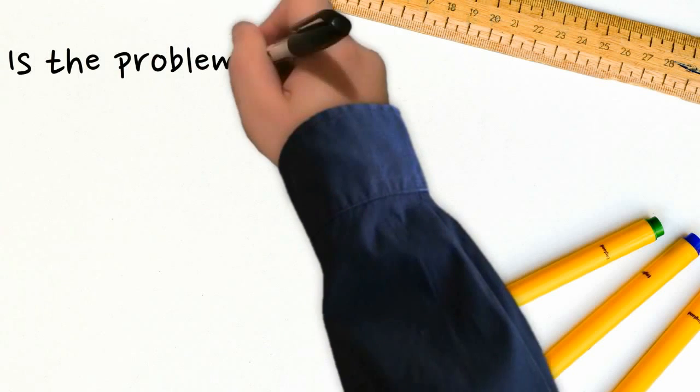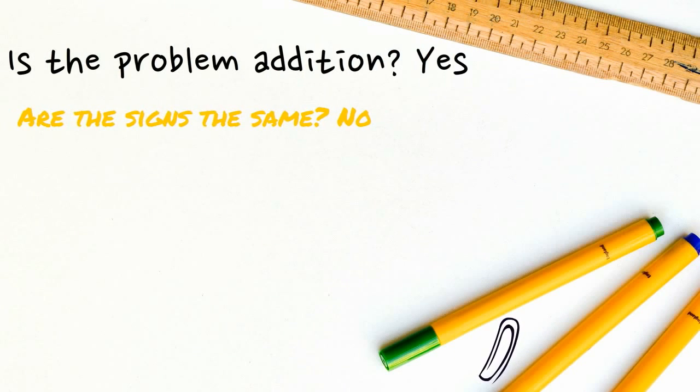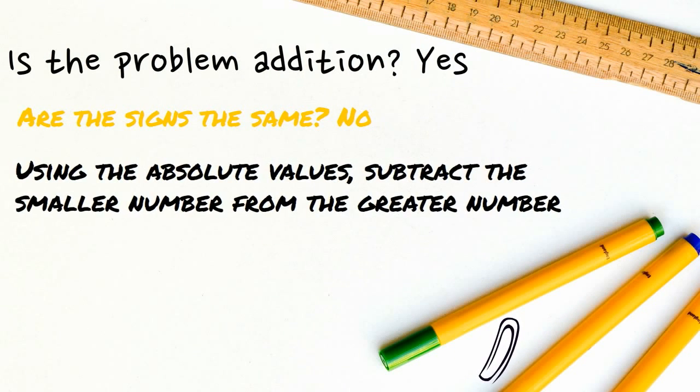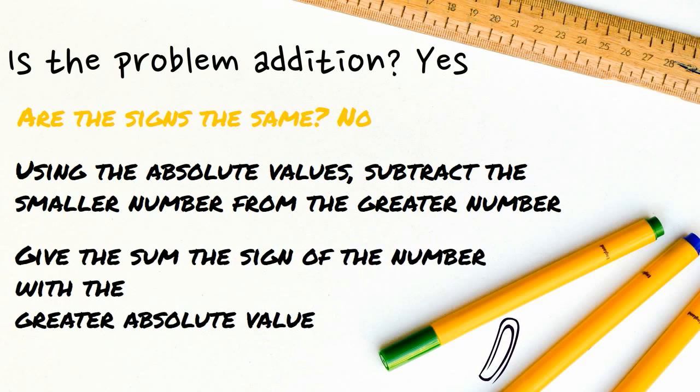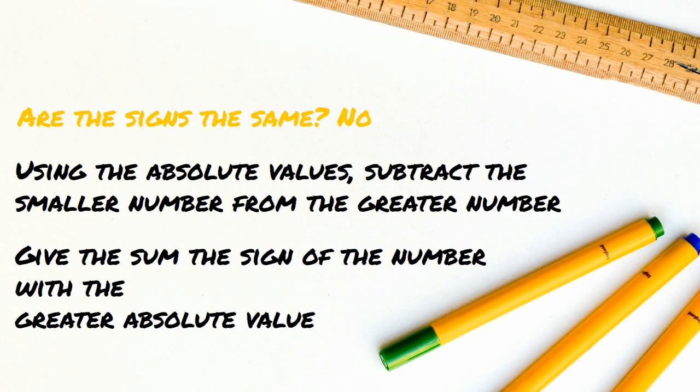If the problem is addition but the signs are different, then using the absolute values, subtract the smaller number from the greater number. Give the sign of the number with the greatest absolute value.